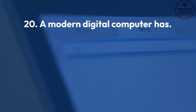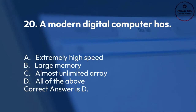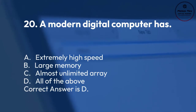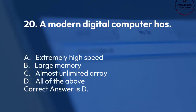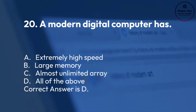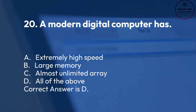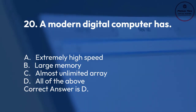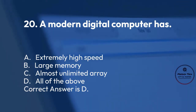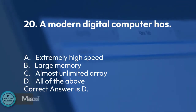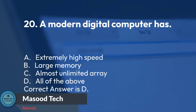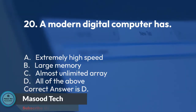Number 20. A modern digital computer has: A. Extremely high speed. B. Large memory. C. Almost unlimited array. D. All of the above. Correct answer is D.